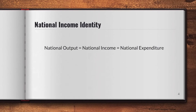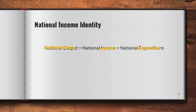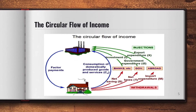One more thing to understand is the national income identity, whereby national output — how much an economy produces — is equivalent to national income, which is equivalent to national expenditure. Essentially, however much money is put into an economy to produce a certain amount of goods means that those goods represent the revenue, the national income, for the country. Later when we cover economic growth and real GDP, you'll understand why output equals income equals expenditure — the economy always achieves an equilibrium.